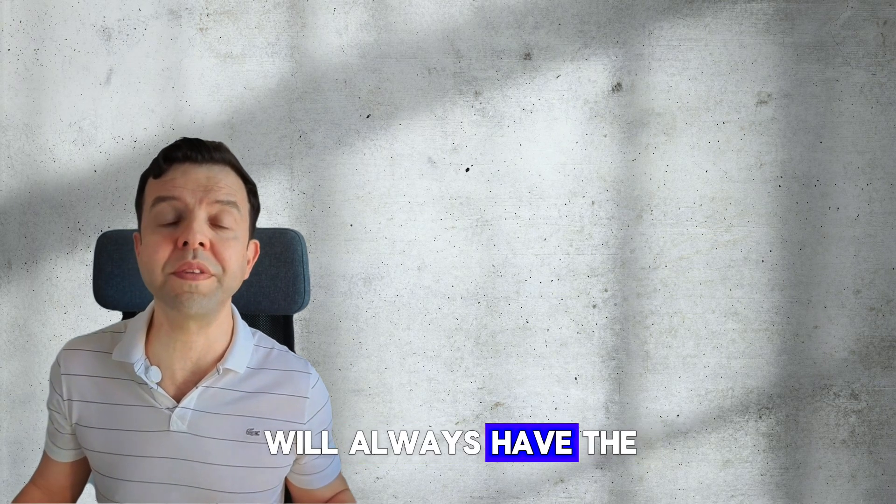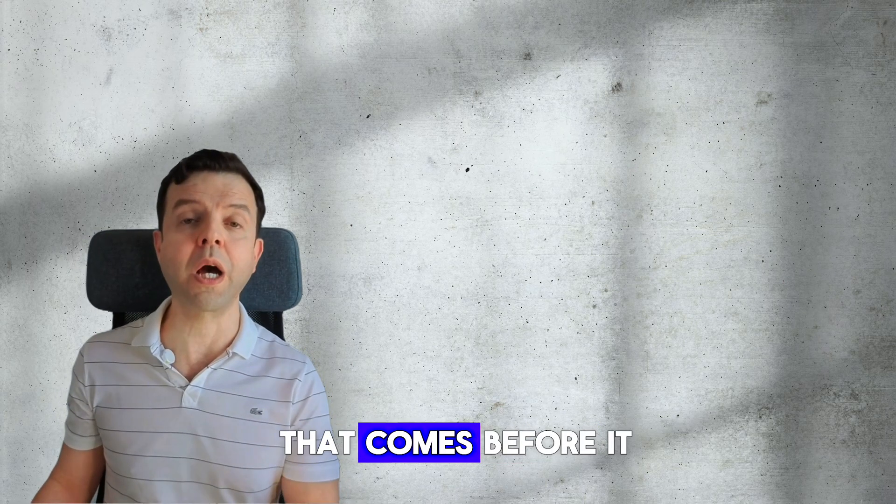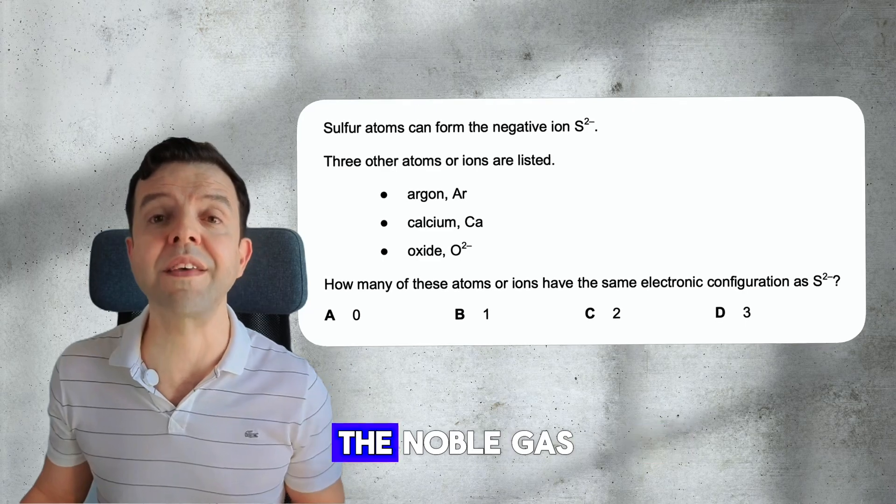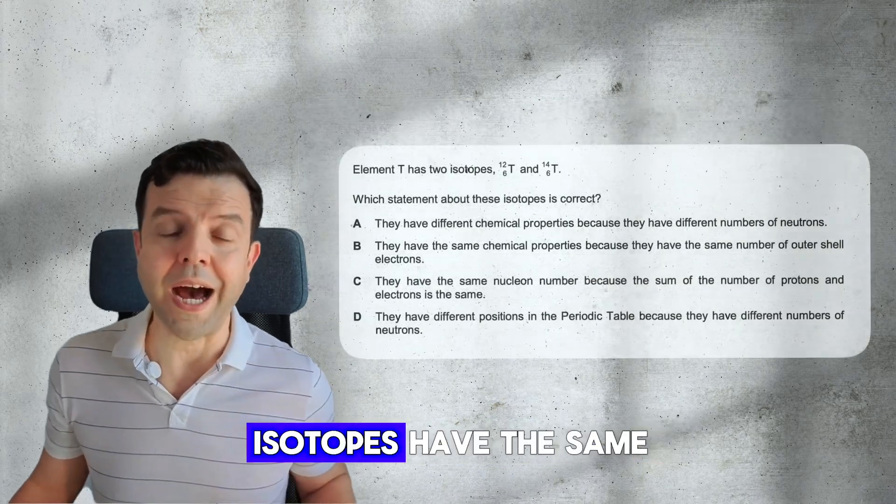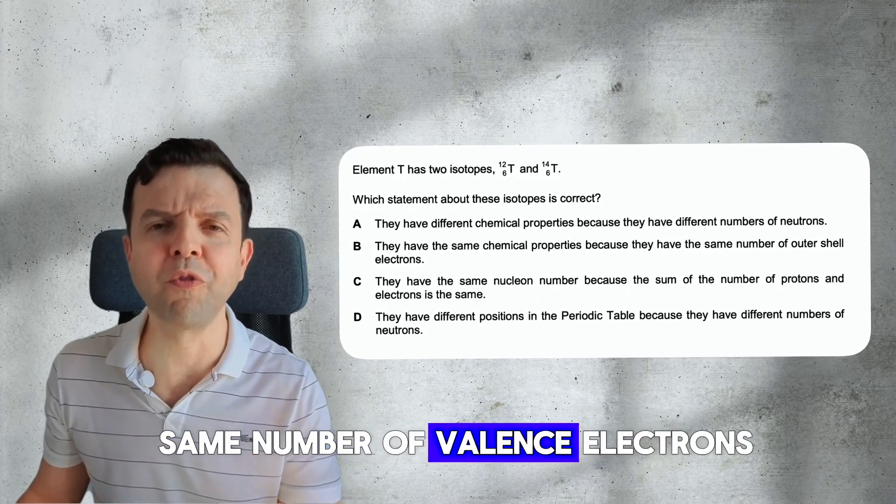Let's now move to atomic structure. A cation or positive ion will always have the same electron configuration as the noble gas that comes before it, while an anion has the same configuration as the noble gas that comes right after it. Isotopes have the same chemical properties because they have the same number of valence electrons.